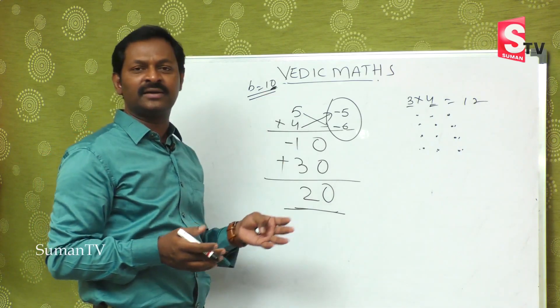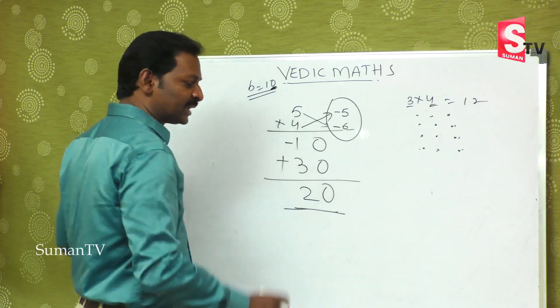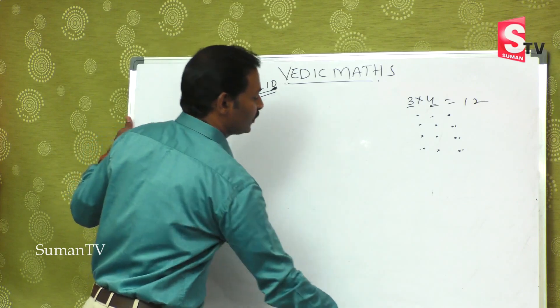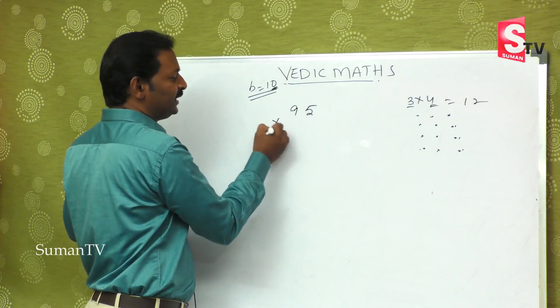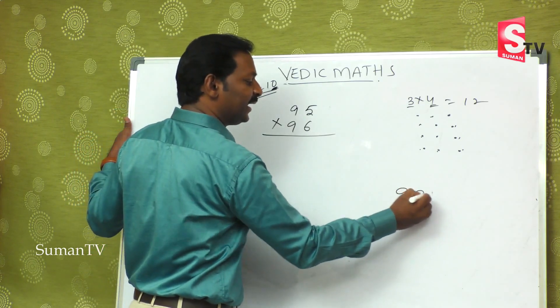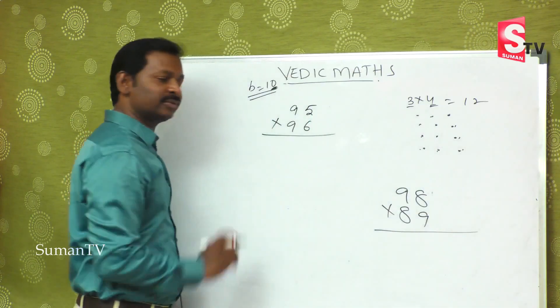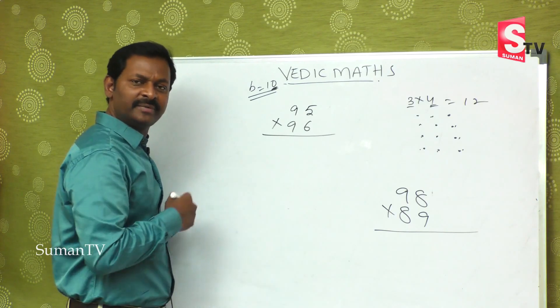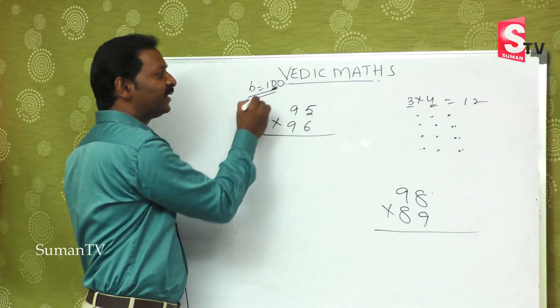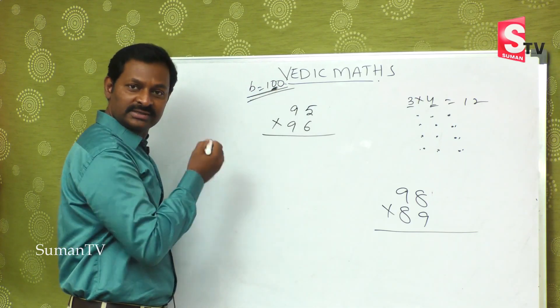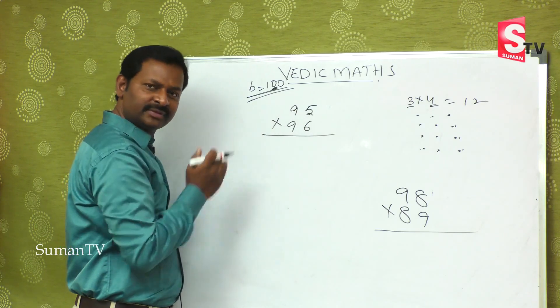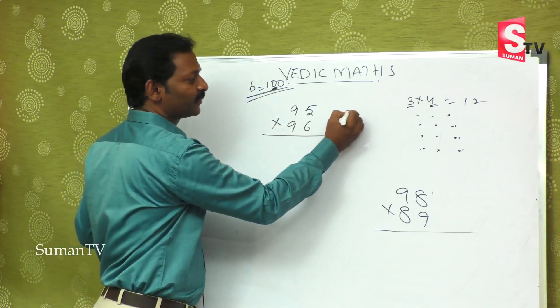It may be small number, it may be big number, but this method is definitely useful for you. Suppose if I go to numbers like 95 is multiplied by 96, or 98 is multiplied by 89. Two different numbers, but immediately you can see the base is 100, because they are very close to 100.